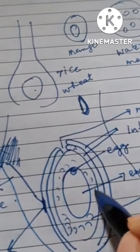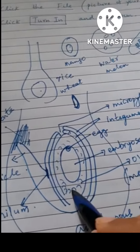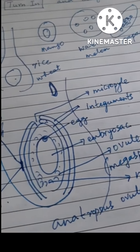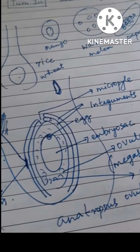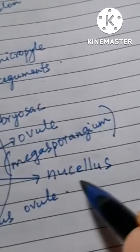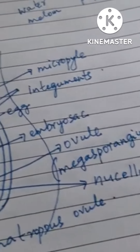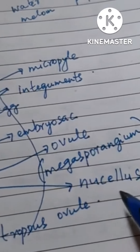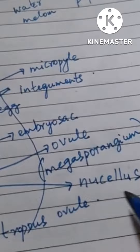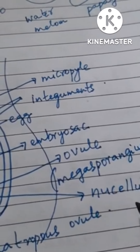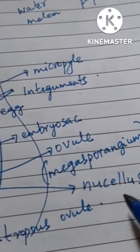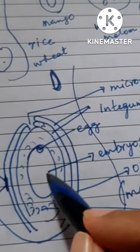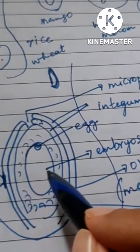The cells inside the ovule are called the nucellus. The nucellus is supplied with nutrients and is filled with food material for the growing embryo sac.